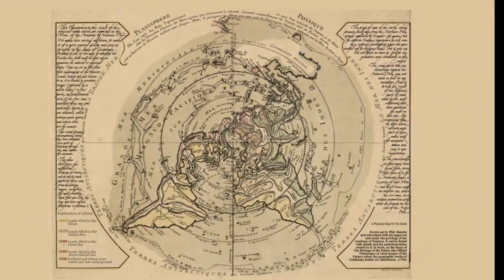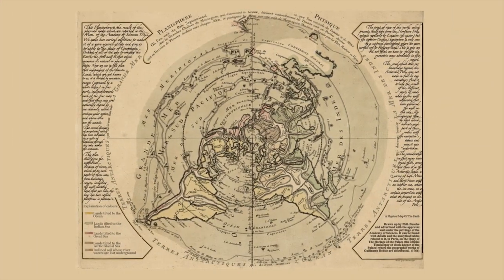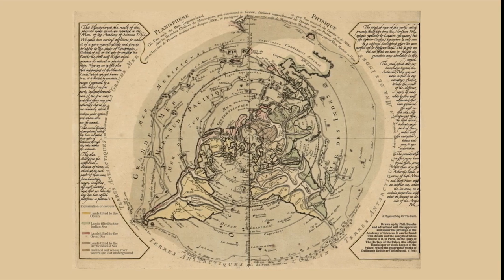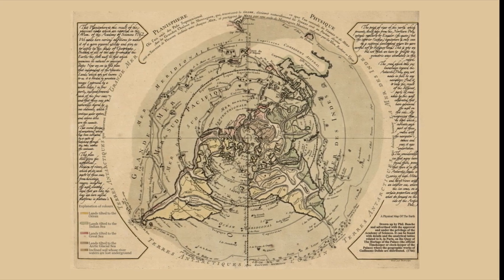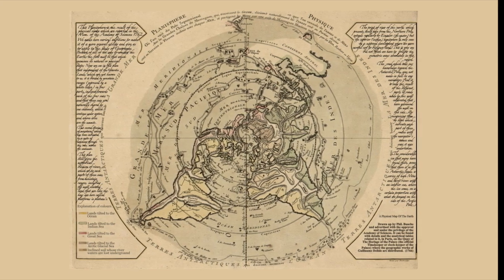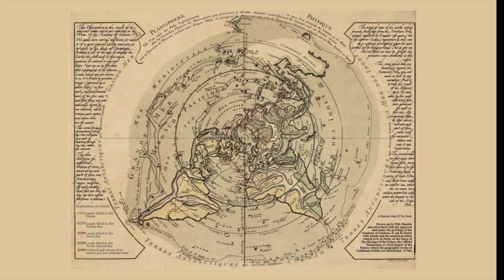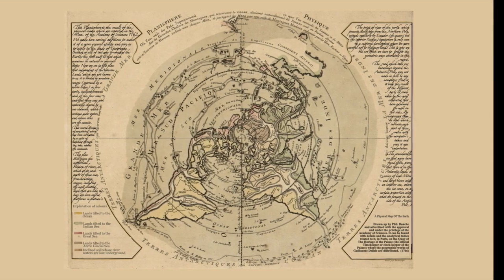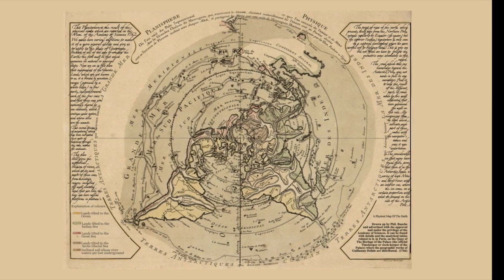You can see right there that they're admitting that the size of the Southern Hemisphere should be much larger, but that they had to shrink it in order to fit with what they believed, even though they know it's incorrect.